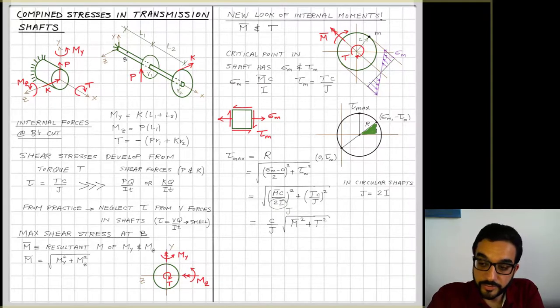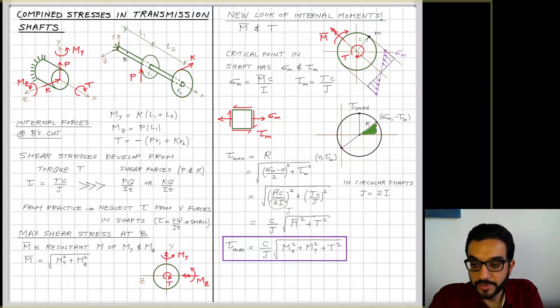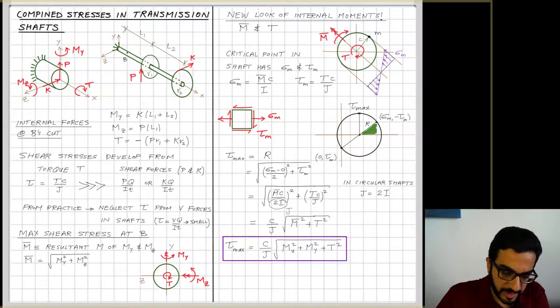So I can summarize or simplify the formula here by seeing there's a common value of c over J, and it's a square under the square root. So now it becomes c over J outside the square root, and now it's square root of M̄ squared plus T squared. Remember, M̄ squared is equal to My squared plus Mz squared. So actually I'll fix that, it should not be Mx, it should be Mz, because this specific example here I'm dealing with the y and z axes.